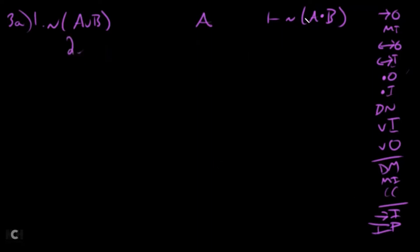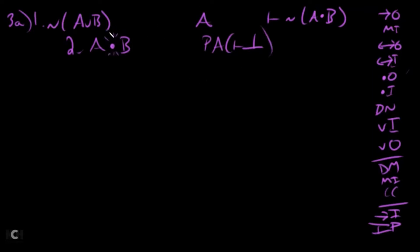Going down the list, the first viable thing we can actually do is indirect proof. So let's provisionally assume the contrary of our goal. We're trying to get squiggle (A dot B), so we're going to take A dot B as a provisional assumption for an indirect proof — trying to get any contradiction. Looking at line two, there is a dot there, so let's go ahead and break that down. And out on line two for both.